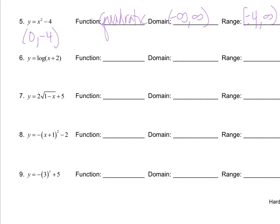Example six is a logarithmic function. We are going to have restrictions on the domain, but for the range it's negative infinity to infinity. The domain comes from the inside — it's whatever makes this zero — because the inside of a log can never be negative or zero. So that's going to be at x equals negative two, which if we were to graph this would be our vertical asymptote. We start at negative two with an open bracket and go to positive infinity, since the coefficient of x is positive.